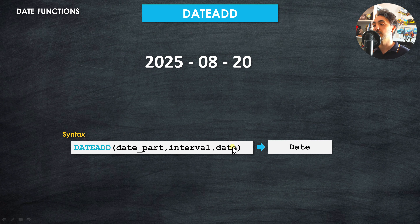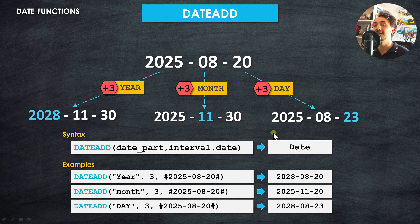To add three months instead, specify 'month' as the date part with interval three. For example, August becomes November while the rest stays the same. Similarly, adding three days changes only the day — the 20th becomes the 23rd — leaving the year and month unchanged.